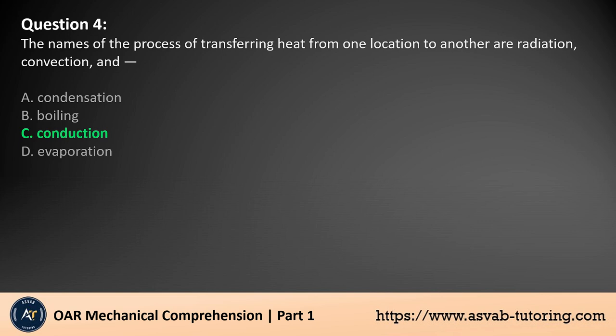The answer is C. Heat can be transferred through three primary processes: radiation, convection, and conduction. Conduction is the transfer of heat through direct contact between molecules within a material. It occurs when heat energy is transferred from a hotter part of a substance to a cooler part without the movement of the substance itself. Conduction is common in solids, especially metals.